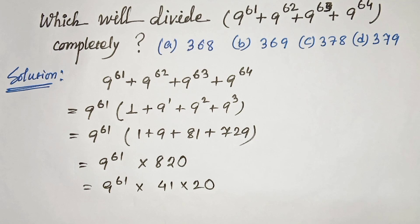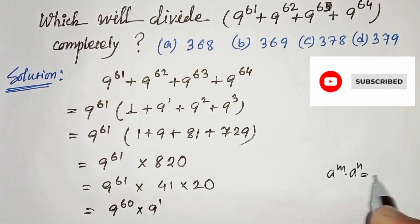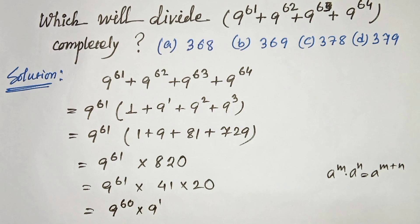And now we can write 9 to the power 60 times 9 to the power 1. Because we know that a to the power m, a to the power n can be written as a to the power m plus n. Here it is 60, 60 plus 1, 61.